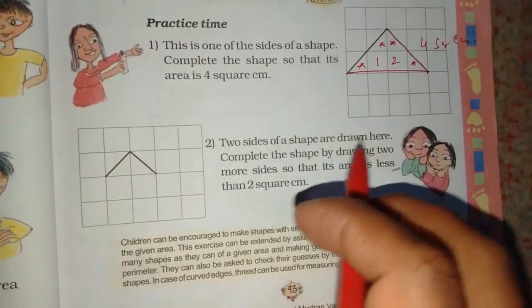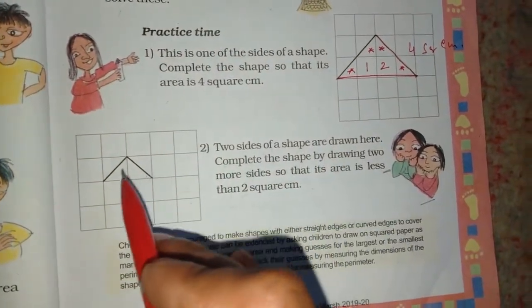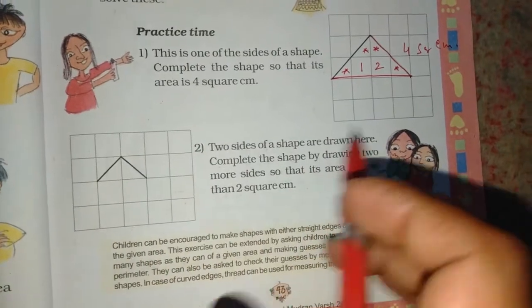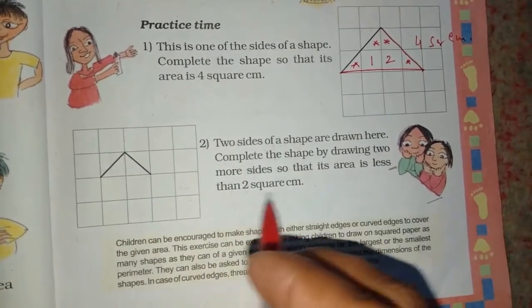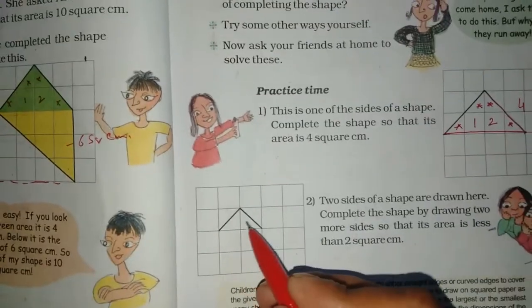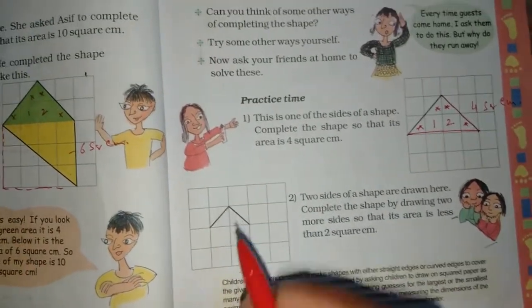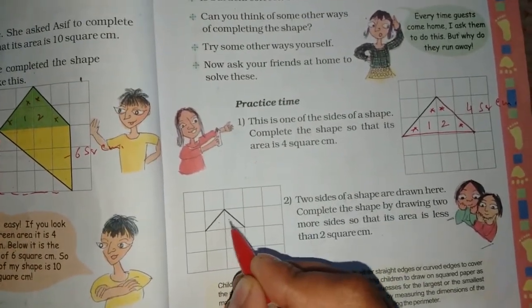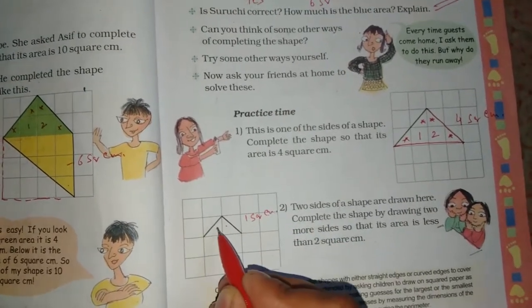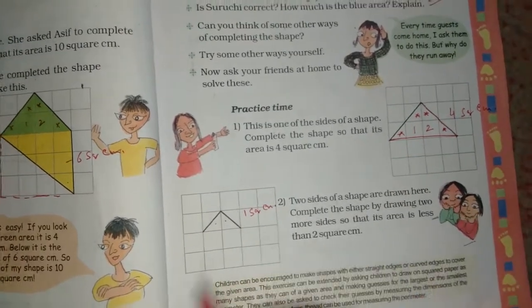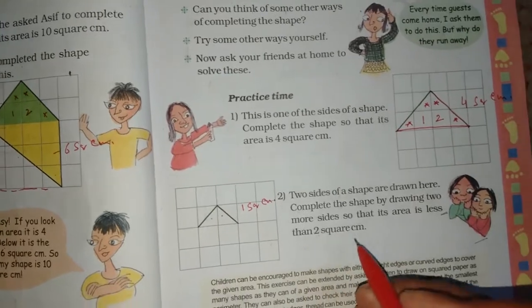Two sides of a shape are drawn here. Complete the shape by drawing two more sides so that area is less than 2 square centimeters. If we block it, this area total is 1 square centimeter, this half is 2 square centimeters. Now we draw two lines.